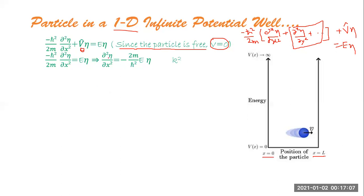Rearranging the equation gives ∂²η/∂x² = −(2m/ℏ²)E·η. We define k² = 2mE/ℏ², so the second-order differential equation for the time-independent case becomes ∂²η/∂x² = −k²η.